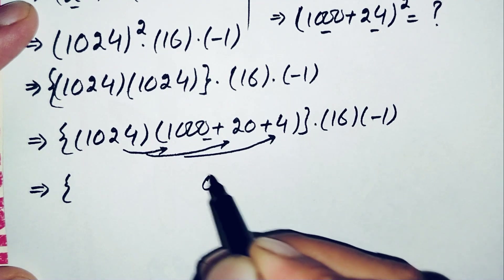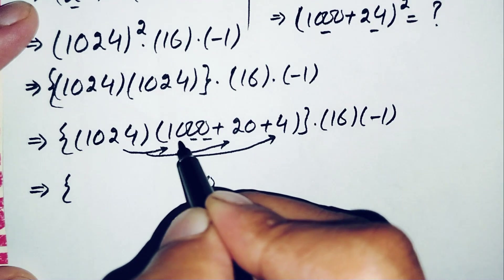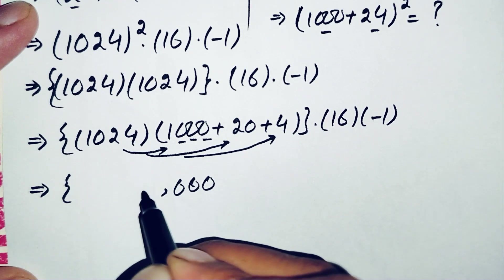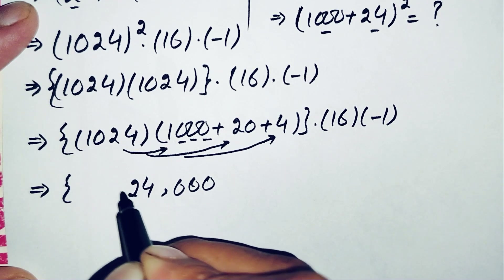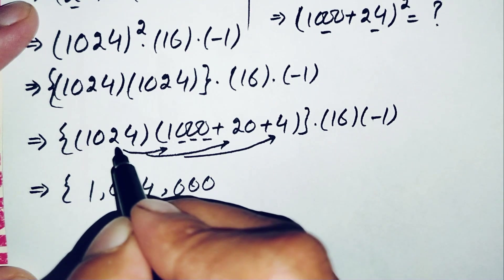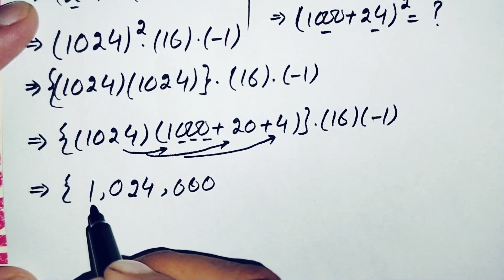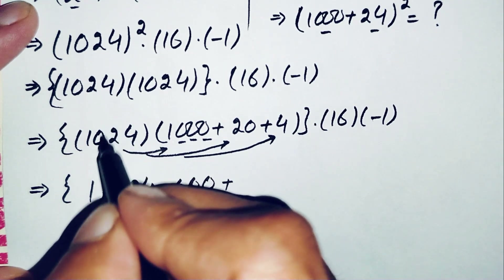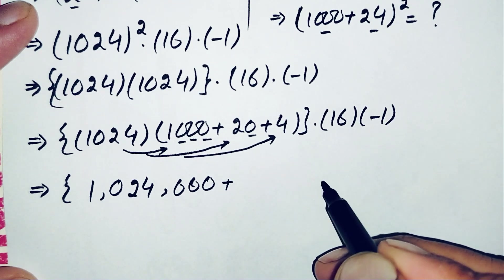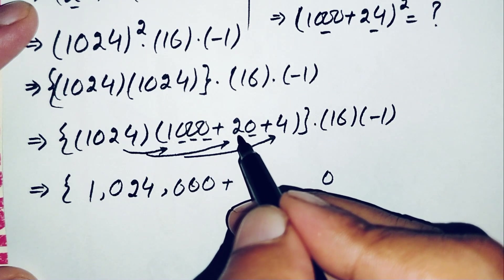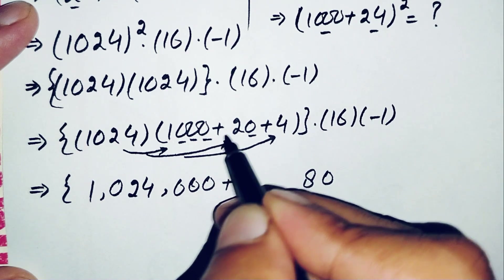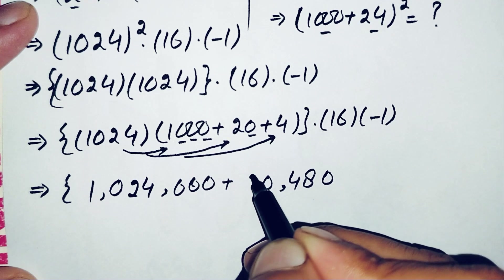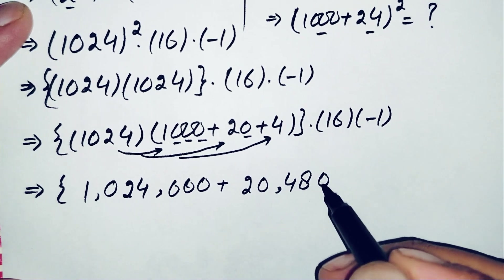Multiplying 1024 by 1000 gives 1,024,000. Multiplying 1024 by 20: 1024 times 4 is 4096, times 2 gives 20,480. So 1024 times 20 equals 20,480.